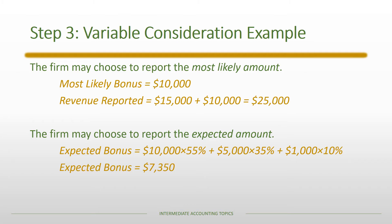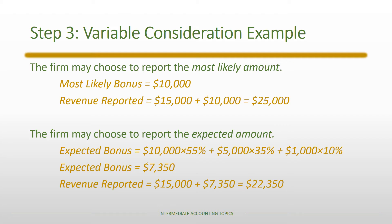The weighted average expected bonus would be $7,350. So in January 2018 they would report the flat fee of $15,000 plus the expected bonus of $7,350, for a total of $22,350. Notice that in the expected value case, the actual payment will almost never be exactly $22,350, and in the most likely amount case, 45% of the time they'll receive a different amount than $25,000. This is what you record at the time the sale is made; later, when actual payment is made, there would be adjustments.